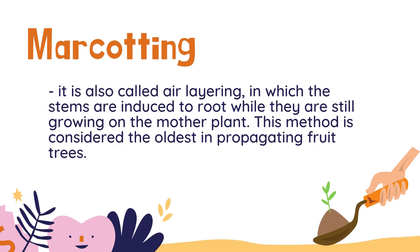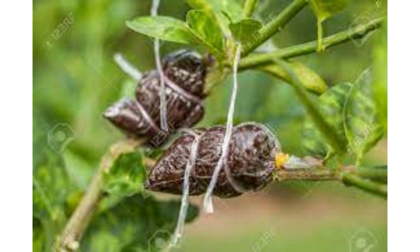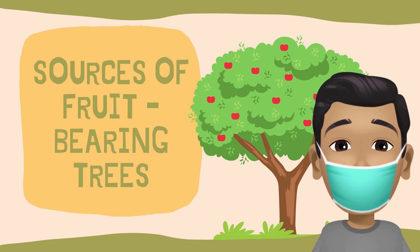Last is marcotting, also called air layering, in which the stems are induced to root while they are still growing on the mother plant. This method is considered the oldest in propagating fruit trees. Here are images of marcotted plants. What are the sources of fruit bearing trees?